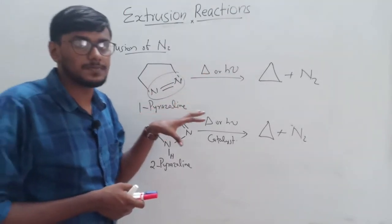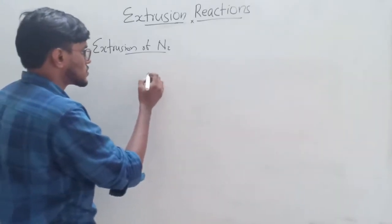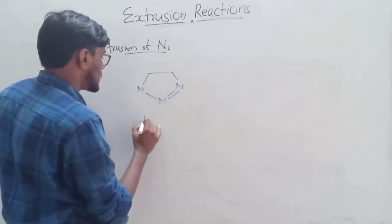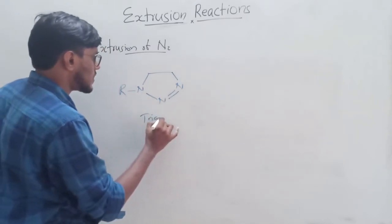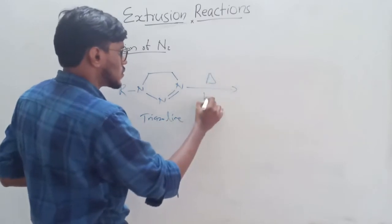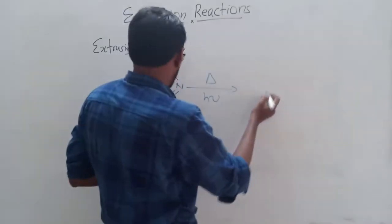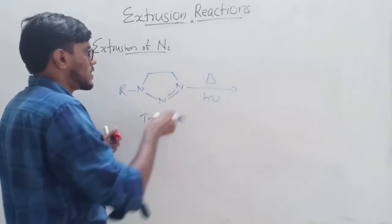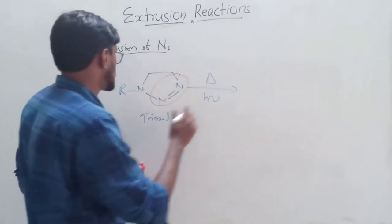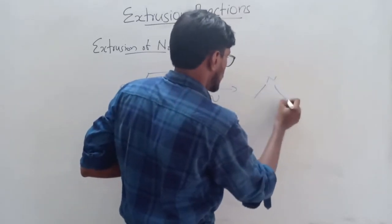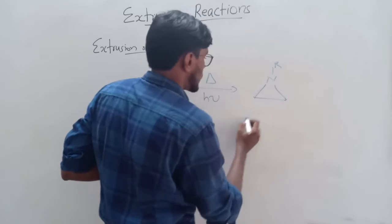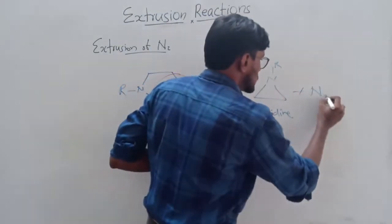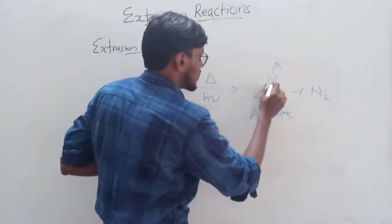Another example for nitrogen extrusion is a triazoline. On reaction with heat or light (pyrolysis or photolysis), the N2 is eliminated and forms a product called aziridine plus N2.